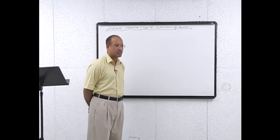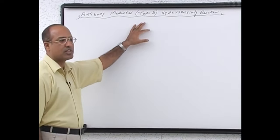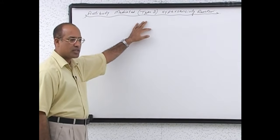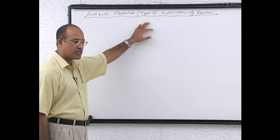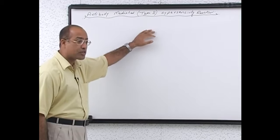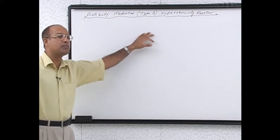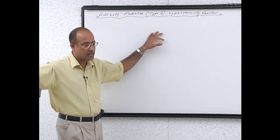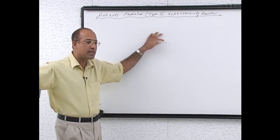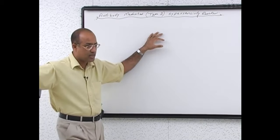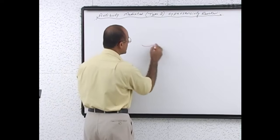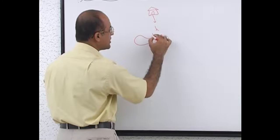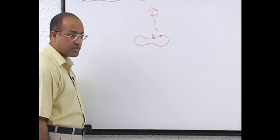Now we are going to talk about type 2 hypersensitivity reaction. Type 2 hypersensitivity reaction is antibody mediated. The antibodies are made against antigens which are expressed on the cell surface or antigens expressed from the extracellular matrix. These antigens are intrinsic to the tissue to which the reaction is occurring. In type 2 hypersensitivity, antigens are fixed and intrinsic to the tissue.